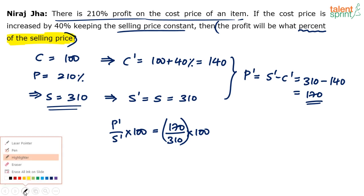I'm sure 90% of us will commit this mistake while solving this question. You will solve it as 170 by 140 times 100 because you're in a hurry. But the question says, what is 170 of 310? Simplify this: 170 by 310 times 100.